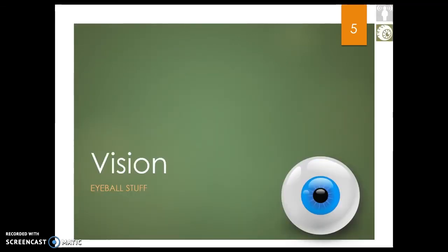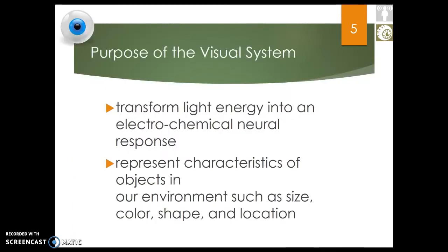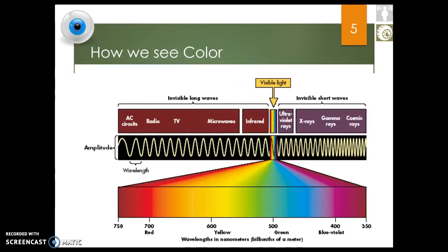Now let's talk about vision. What's the purpose of the visual system? We have eyeballs so we can see the world. There are many different types of light waves — radio waves, television waves, microwaves, X-rays — those are all light waves, but we don't see them. We only see a small band of visible light. And the wavelength of a light wave is what determines its color.